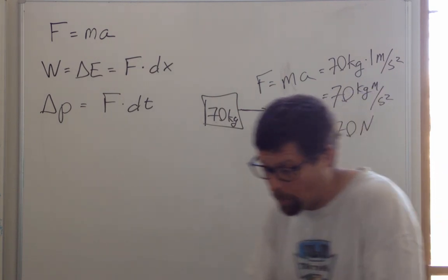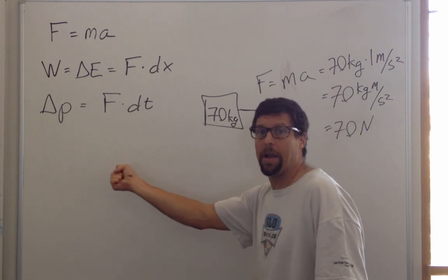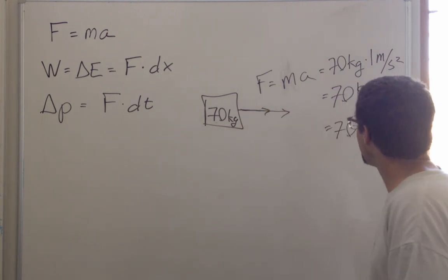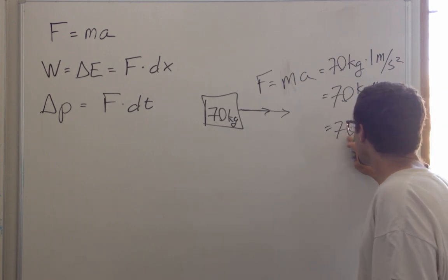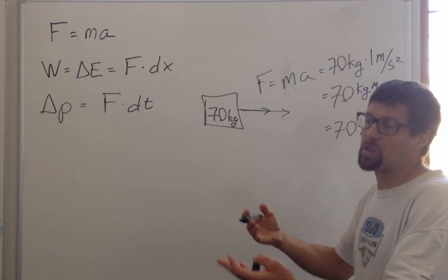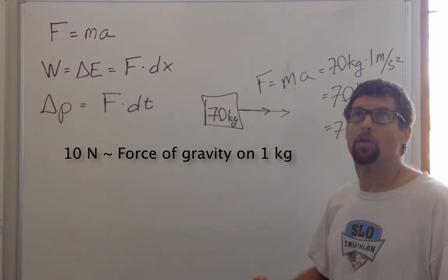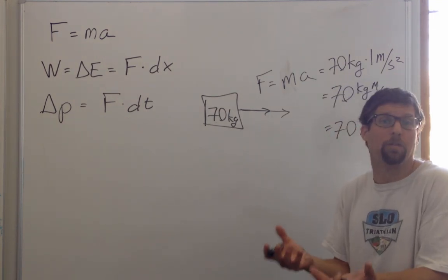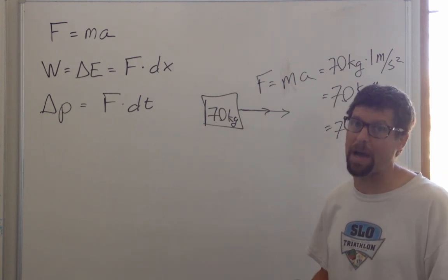Okay. How much is 70 newtons? Well, it's enough to make me accelerate at one meter per second squared. We could also put it in terms of gravity. It would be, what did we say, 10 newtons is the force on one kilogram. So this would be the force of gravity on seven kilograms, or equal to the force of about 15, 16 pounds.